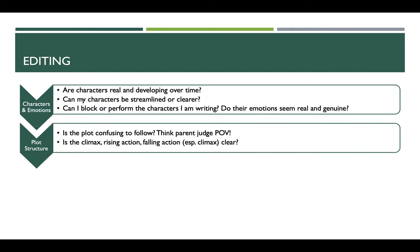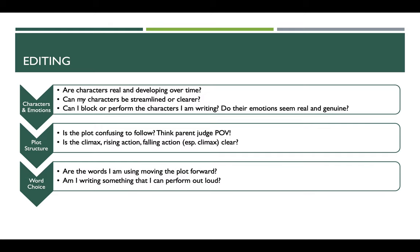In regards to plot structure, ask yourself: is the plot confusing to follow? Don't think from the perspective of you as the writer — think from the point of view of a parent judge at eight in the morning or three in the afternoon after having judged several rounds. Is the plot confusing to follow? How can we make the climax, the rising action, and the falling action — especially the climax as the most intense part — more clear? Is my plot something a parent judge can follow? If not, how can we edit the dramatic plot structure to make it clearer?